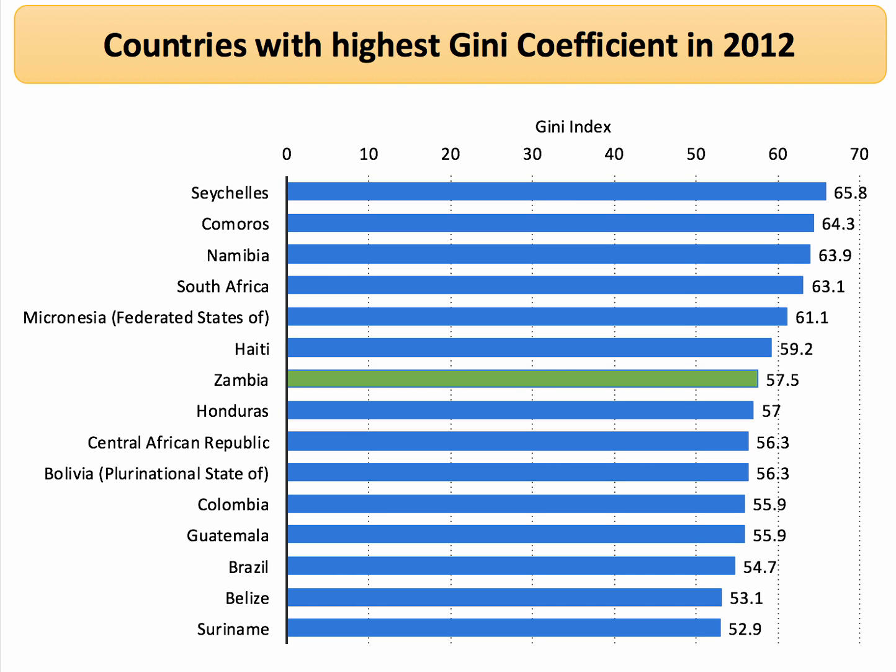These are the countries in the world with the highest Gini coefficient, expressed as a number between 0 and 100 in 2012. The Seychelles has the dubious honour of the greatest income inequality. I've also included a country like Zambia — copper-rich Zambia — with very high inequality. Brazil scrapes into the countries with high Gini coefficient, all of which are above 0.5, or above 50 expressed in that way.